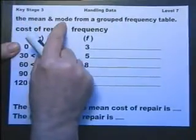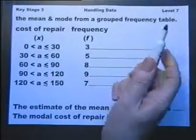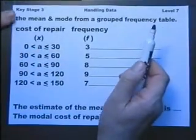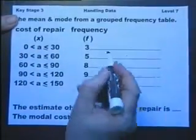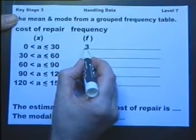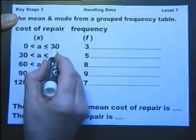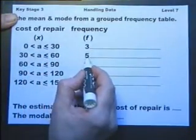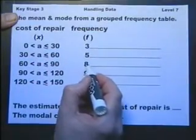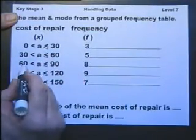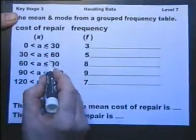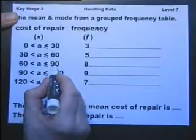Finding the mean and the mode from a grouped frequency table. So here we have a grouped frequency table on the cost of repairs. So let's suppose it's saying three motorbike repairs cost between 0 and 30 pounds. Five repairs cost between 30 and 60 pounds. Eight repairs cost between 60 and 90, or to be more accurate, between 60 and 90 including 90.